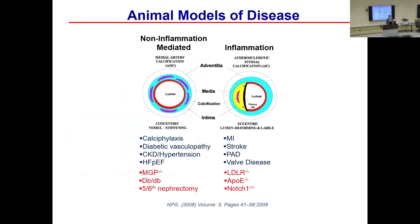How do we study calcification in the lab? There are models of inflammatory vascular calcification as well as medial calcification commonly used in the laboratory. LDLR knockout and apoE knockout mice on high-fat diets model atherosclerotic calcification. Deficiency of the matrix GLA protein gene, MGP, is a model for medial vessel calcification, as are models of diabetes and chronic kidney disease in mice.